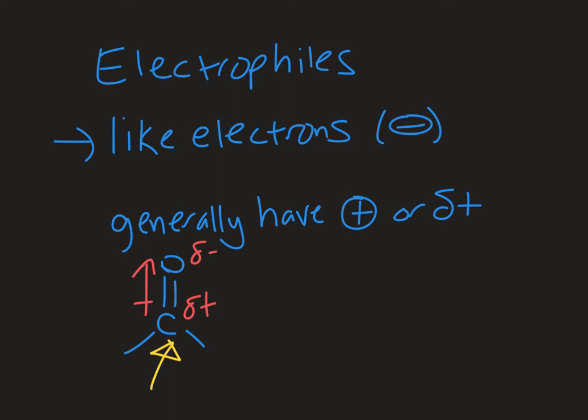Another example would be a carbocation. This has a full positive charge on it. Those are common intermediates in organic reactions and it's a really good electrophile because it has a full positive charge. It's deficient to full octet, and so it's going to be very reactive and very susceptible to nucleophilic attack.